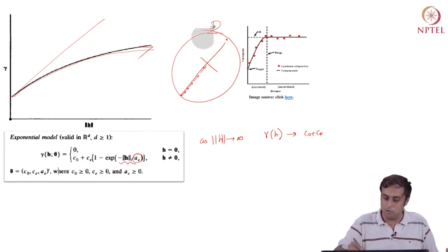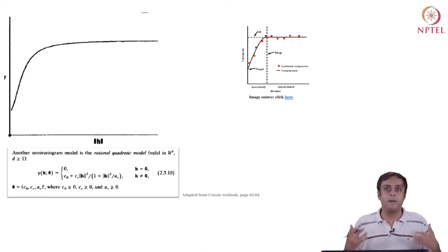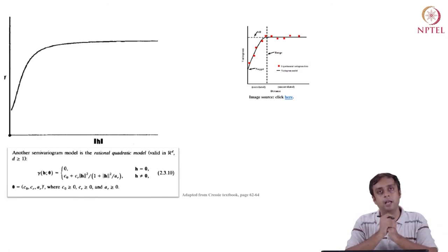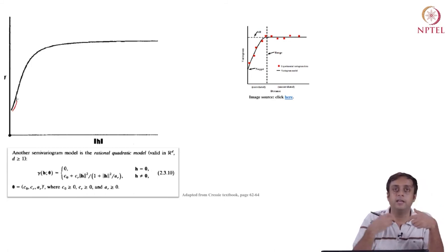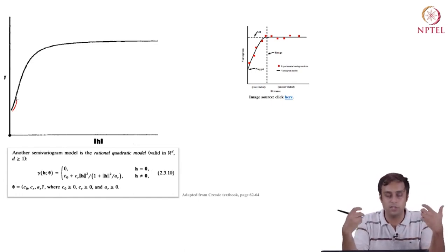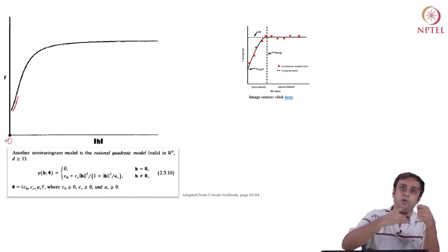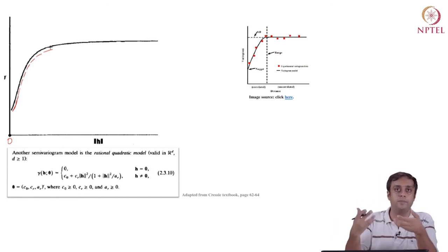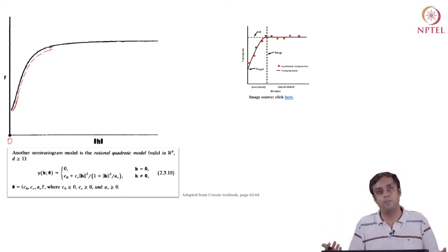If instead you believe there will come a point after which there will be no spatial relation in the data, then perhaps the spherical model is the way to go. Finally, there is another one called the quadratic model. Its parameters provide the nugget, how far until the sill is reached, and the rate. With the quadratic model, once you start out from any location, the decline in spatial dependence shoots down very quickly at an increasing rate — a convex function — after which it stabilizes and then decreases at a decreasing rate, becoming a concave function. The choice of model depends on the kind of real-world analysis you are conducting.